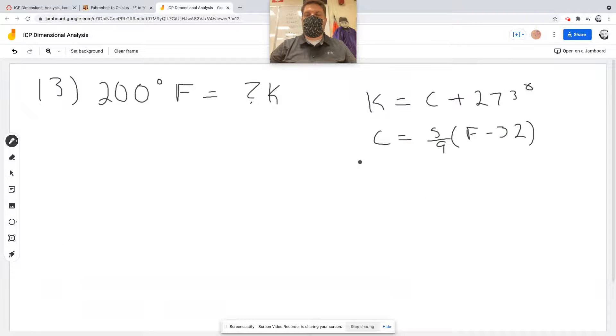So to find the Celsius, I'm going to say 5 over 9 times 200, and then we'll double check this when we're done and see if we're right. Minus 32 degrees.